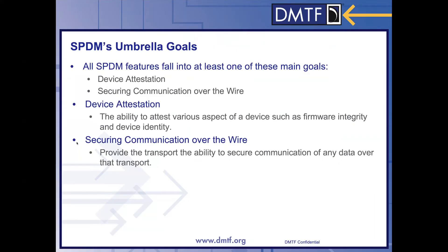There are two main goals in SBDM. They are device attestation and securing communication over the wire. Device attestation is the ability to attest various aspects of a device, such as firmware integrity and device identity. Securing communication over the wire is providing the transport the ability to secure communication of any data over that transport.